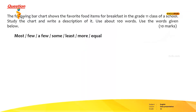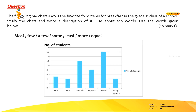Now children, let's go to our question. First, you have to read the question with me. Read louder. The following bar chart shows the favorite food items for breakfast in a grade 11 class of a school. Study the chart and write a description of it. Use about 100 words and use the words given below.